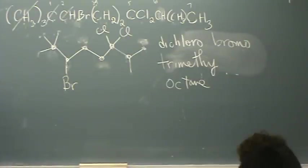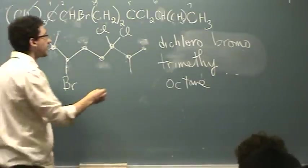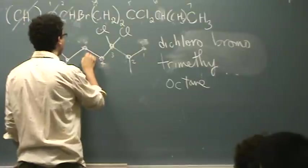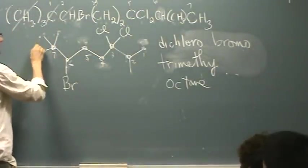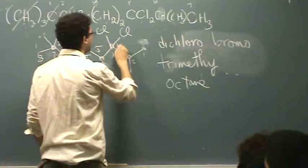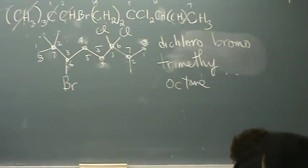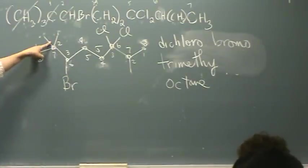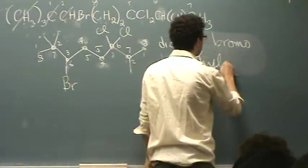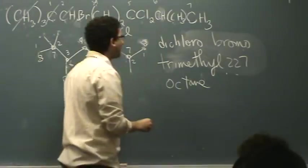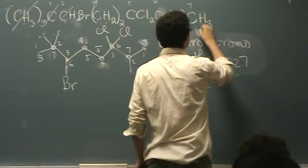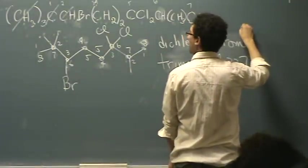We have to do the numbers before we can put it together in our template. There's two choices. You can number from the right or left. Let me try both. One, two, three, four, five, six, seven, eight on the bottom. One, two, three, four, five, six, seven, eight on the top. Then I want to see which one will give me the better set of numbers. Let's do the top first. That'll give me a 2, 2, 7 for the methyls. For the dichloro, it'll be a 6, 6. And for the bromo, that's a 3.